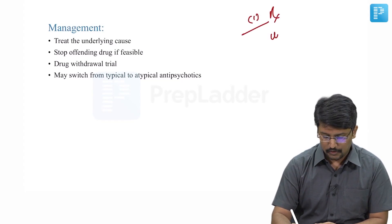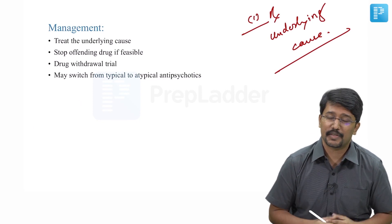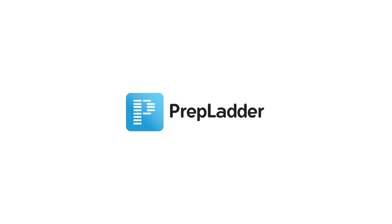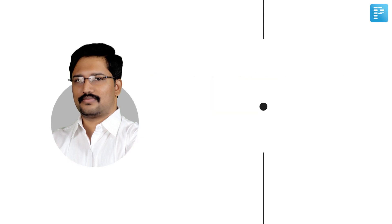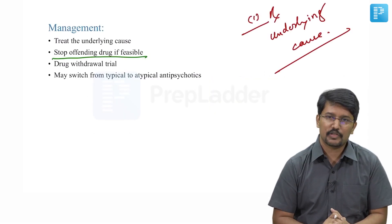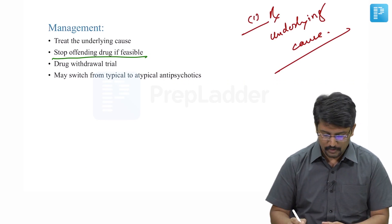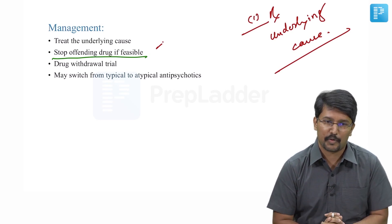The principle is to always treat the underlying cause. So if it is a prolactinoma, we know there are drugs to treat prolactinoma. If there is an indication for surgery, we should offer them surgery. If it is caused by a drug, we should make all attempts to stop the offending drug. If that is not possible, we have to switch to a class of drug which is not known to cause hyperprolactinemia.